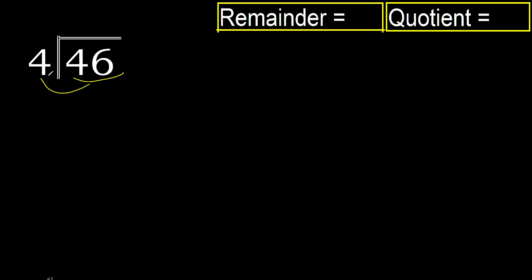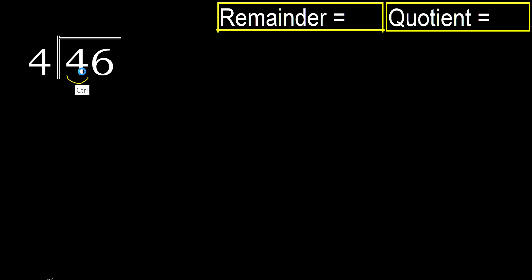46 divided by 4. 4 is not less, therefore start with 4. Here, 4 multiplied by which number is nearest to 4 but not greater? 4 multiplied by 2 is 8 — that is greater. Multiplied by 1 is 4 — ok, that is not greater. 4 minus 4 is 0. Next.